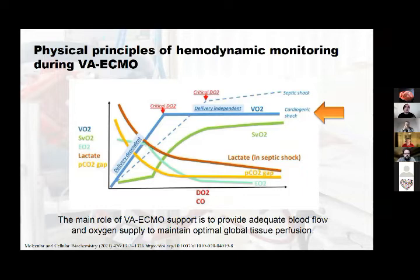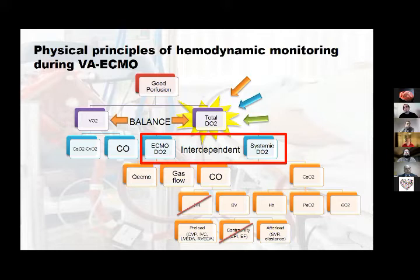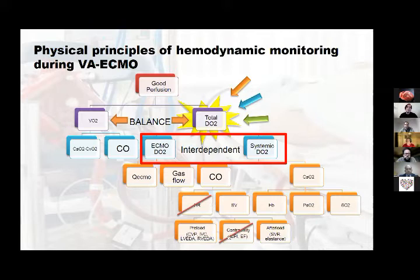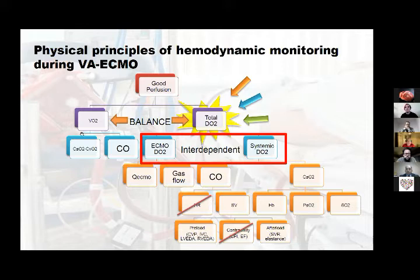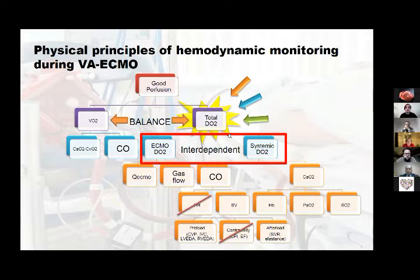The goal of hemodynamic monitoring and support is to obtain adequate perfusion — to give the oxygen supply that the patient needs in shock. We have systemic oxygen delivery and ECMO oxygen delivery. In cardiogenic shock, heart rate and contractility are impaired, so we need to supply external cardiac output from the ECMO. The mixing of these two oxygen transports gives us the total oxygen transport to provide adequate perfusion.